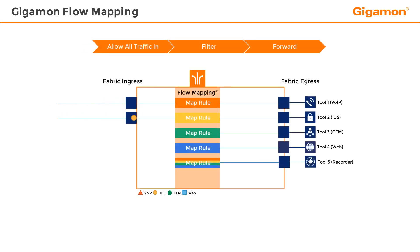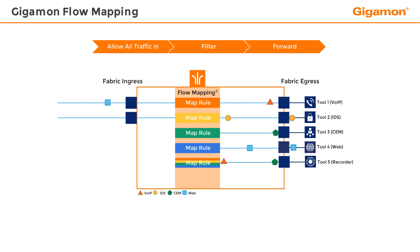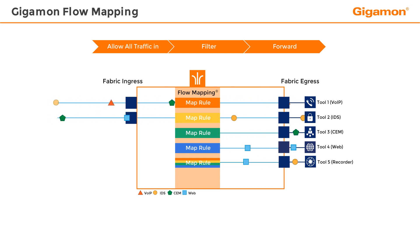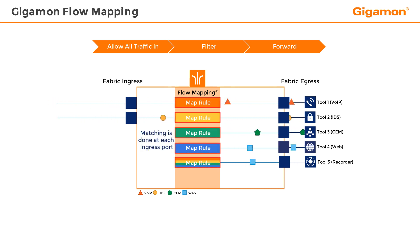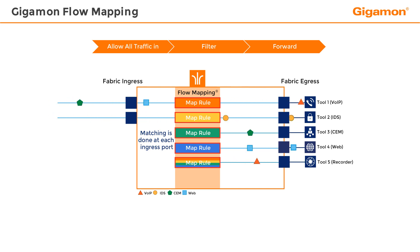Gigamon flow mapping permits all traffic in, applies filtering rules, and then sends matching traffic to one or more egress ports. Since all traffic is permitted in, all packets are evaluated for matches to the mapping rules. Matching is done at each egress port, so there is no congestion no matter how much traffic flows through the map.